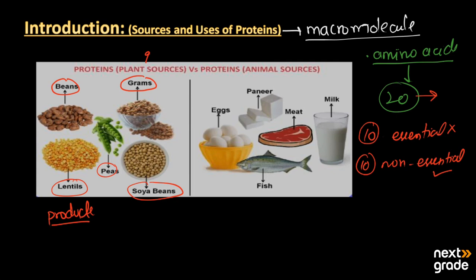On the other hand, when we look at the animal sources of proteins, we have eggs, paneer, milk, meat, and fish. All these are sources of proteins that we take from animal sources. Eggs are produced by the hen, paneer is made from milk gained from animals, milk itself is a source of proteins, meat is gained from animals, and fish itself is a main source of proteins.